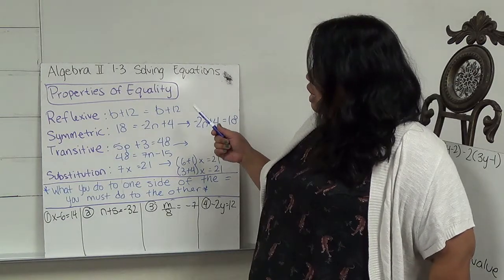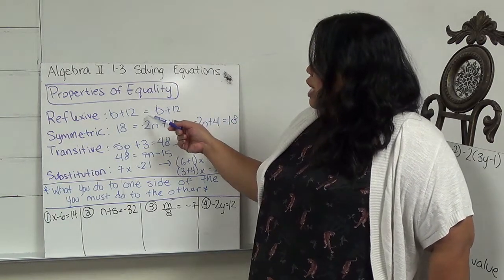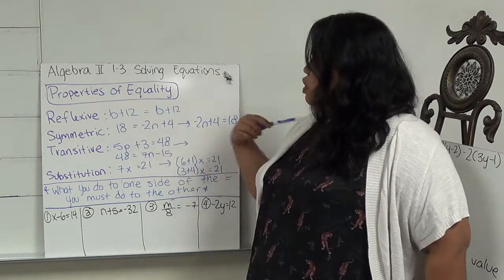Reflexive basically means when you're dealing with an equal sign, that b plus 12 equals b plus 12.